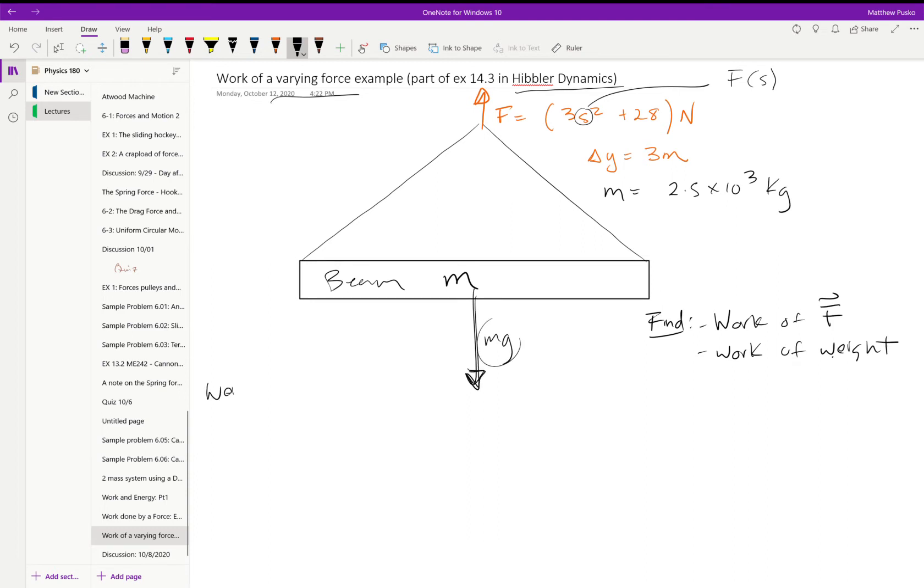Let's look at the work due to that weight. We saw we have a formula for that now. It's the minus the weight, or the force due to gravity, times the displacement, delta y.